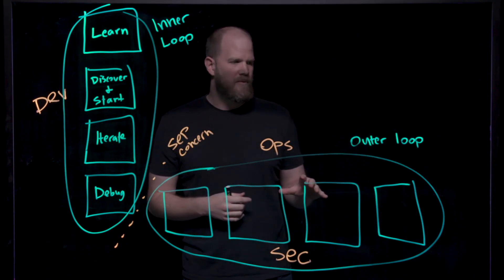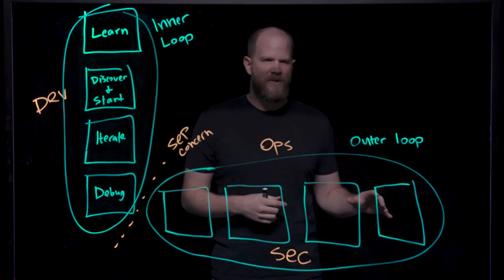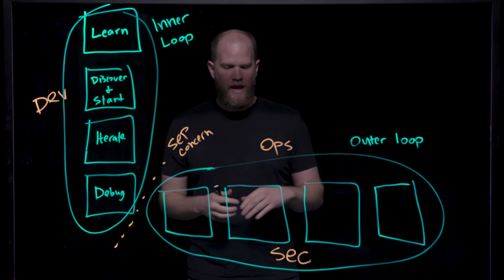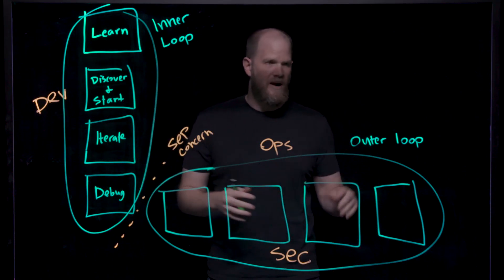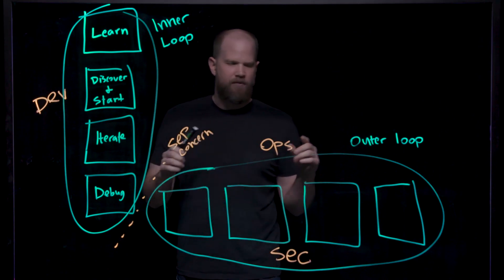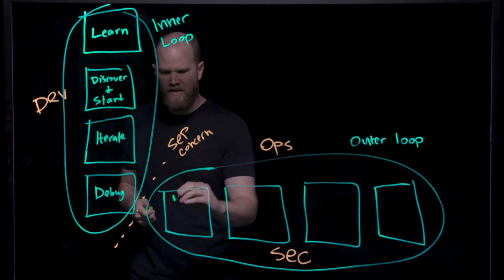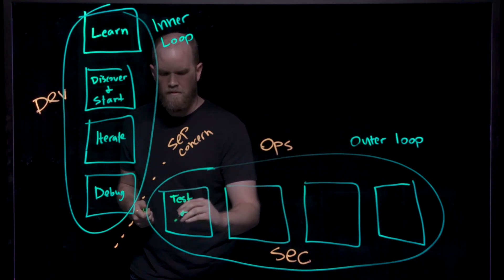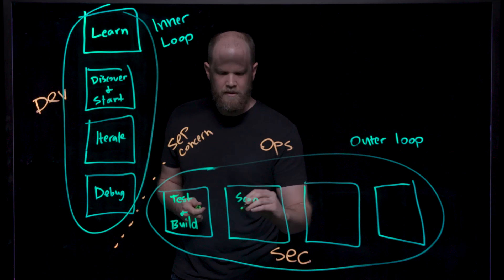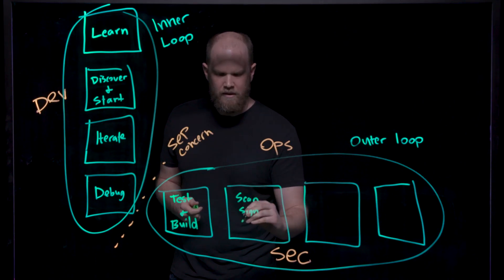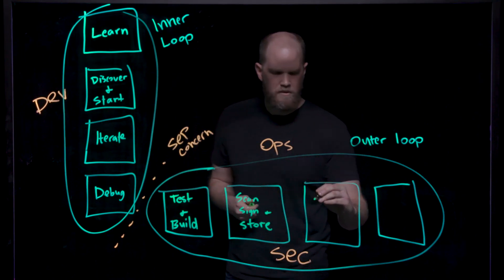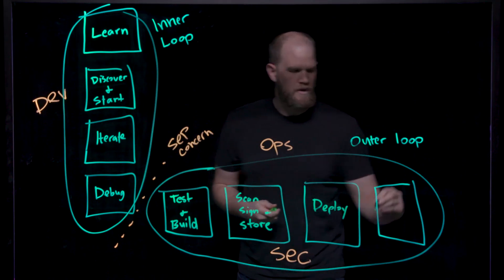Now this takes us to the outer loop. The outer loop is all about the path to production — this is about your operators and security personas, making sure that any code that goes into a shared environment or production environment is operationally sound and secure by default. The four outcomes we're focusing on here are: test and build, scan, sign and store, deploy, and then run.